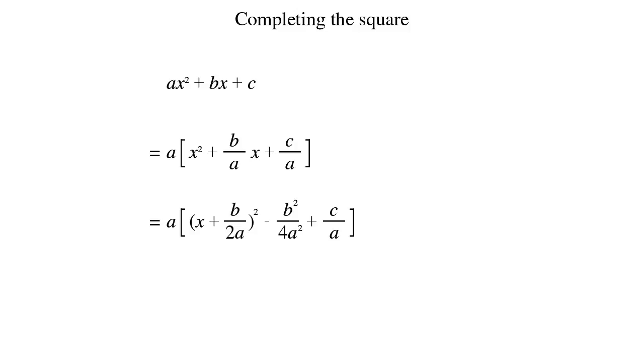Finally, we can now multiply the a back through the expression. So we obtain a times x plus b over 2a all squared minus b squared over 4a plus c. We have now finished completing the square.